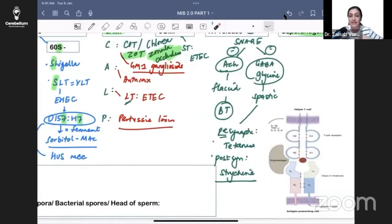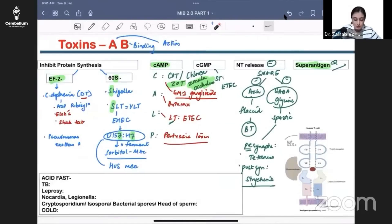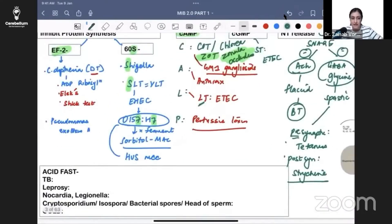Remember superantigen: two things - Strep and Staph. Strep pyogenes exotoxin A, and Staph, which produce superantigen leading to toxic shock syndrome. The buzzword will be either a retained tampon or retained nasal gauze - some foreign body will be mentioned for diagnosis. These are all the toxins - gets you one question minimum in every exam.